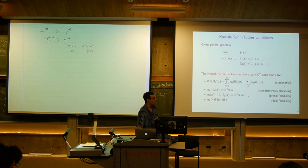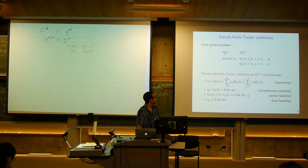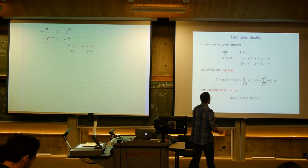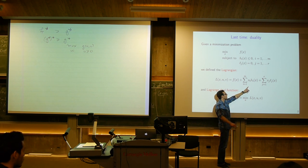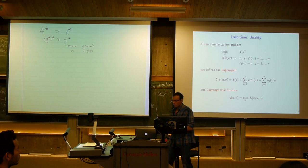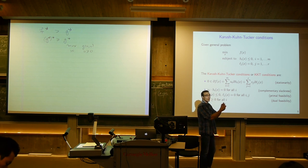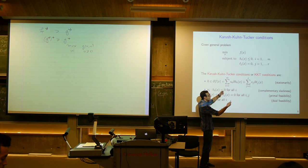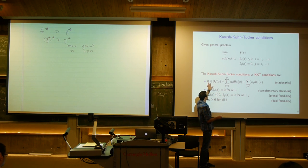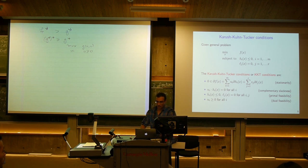The first of the four KKT conditions is called the stationarity condition. By the way, KKT stands for Karush, Kuhn, and Tucker. The stationarity condition asserts that if we take the subgradient of the Lagrangian as a function of x — with u and v fixed — that must contain 0 at the point x. You can think of this as x minimizing the Lagrangian at the point u, v, by the subgradient optimality condition.